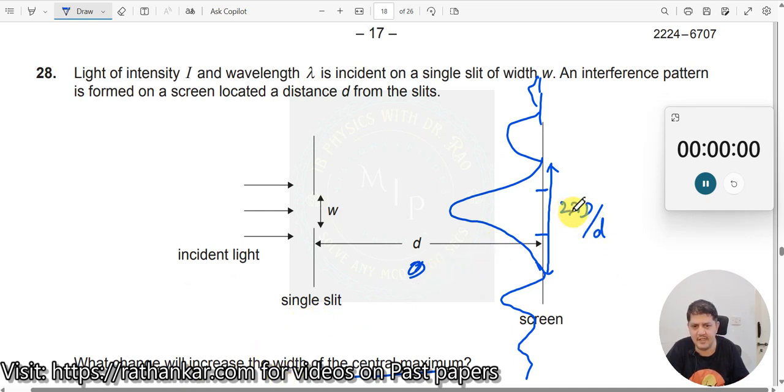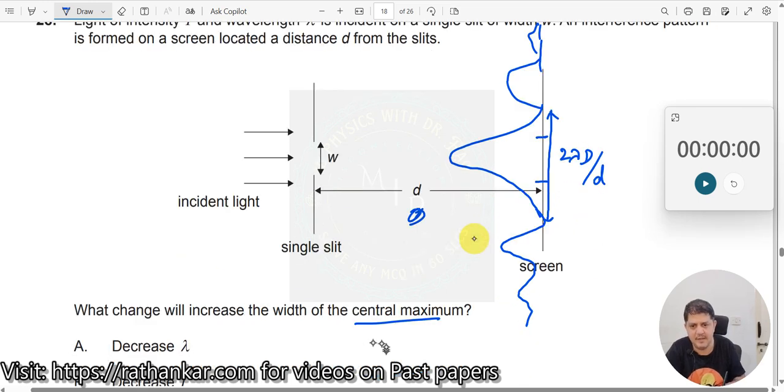You should increase the value of lambda. Let me write down. Before looking at the options, let me write down. I will say either lambda should increase or capital D. Instead of capital D, I put small d. I will say either d should increase. Or this small d, what is small d here? W. This W should decrease.